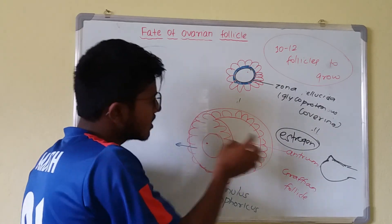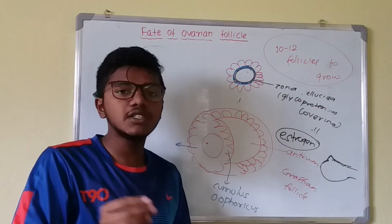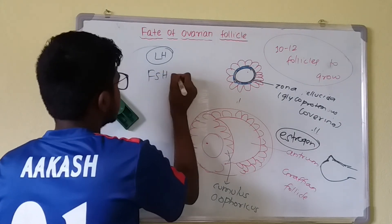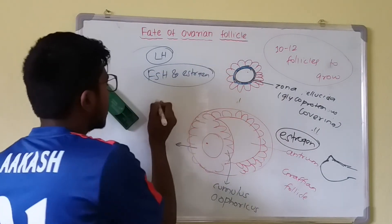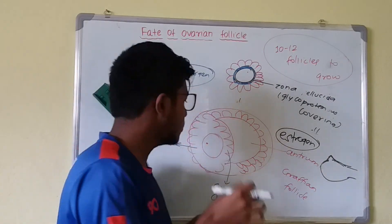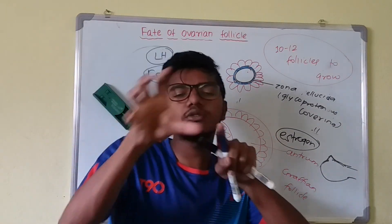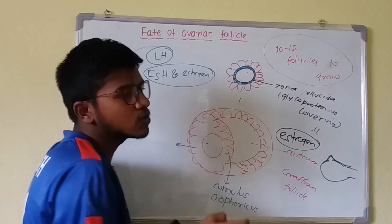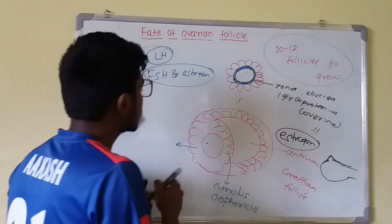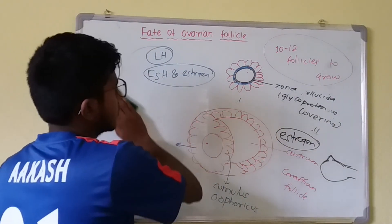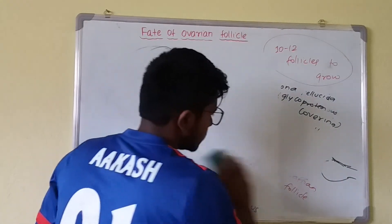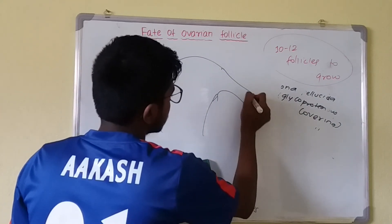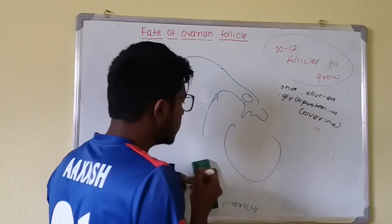Ovulation is due to LH, while maturation of the follicle is due to FSH and estrogen. After the ovum ruptures, it enters the fallopian tube through fimbrial action. The follicular cells, however, remain inside the ovary. Outside the follicle, stromal cells rearrange into two layers.